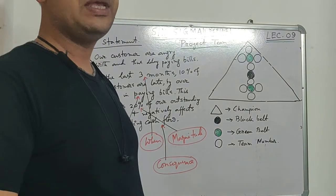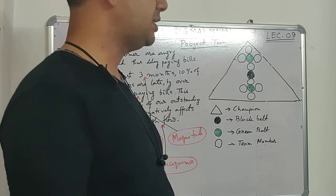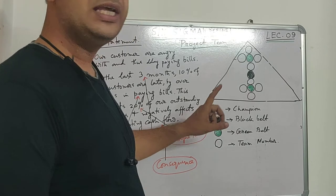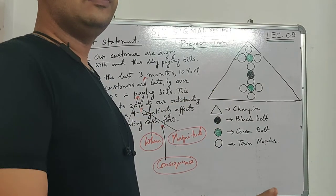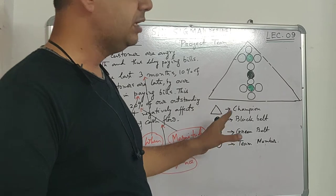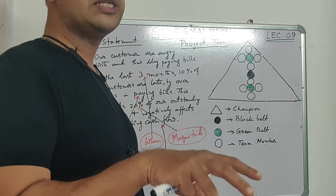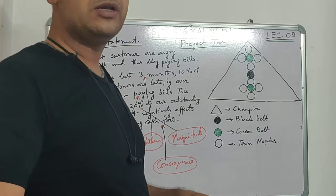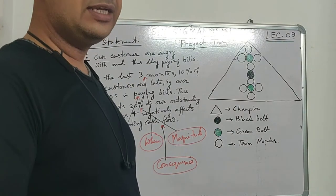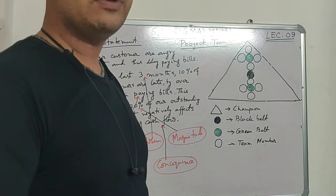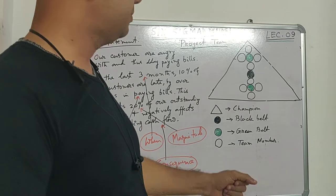For making a Six Sigma team we typically need at least twelve to thirteen people. In that team there will be a champion — the flag bearer of the Six Sigma project. He may be a department head, section head, or functional head with profit and loss responsibility. The champion guides and facilitates the team with resources and reviews the project from time to time.